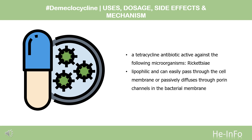D-meclocycline is a tetracycline antibiotic active against the following microorganisms: Rickettsia (Rocky Mountain Spotted Fever, Typhus Fever and the Typhus Group, Q Fever, rickettsial pox, Tick Fevers), Mycoplasma pneumoniae (PPLO, Eaton Agent), agents of Psittacosis and Ornithosis, agents of Lymphogranuloma Venereum and Granuloma Inguinale, the spirochetal agent of relapsing fever, Borrelia recurrentis.